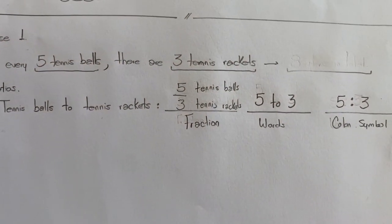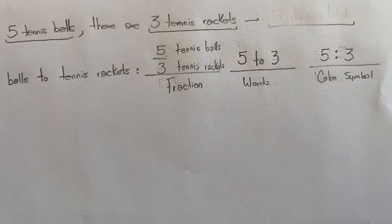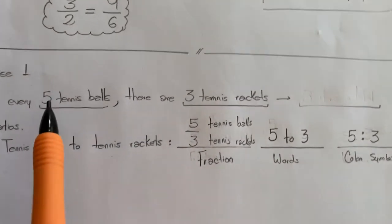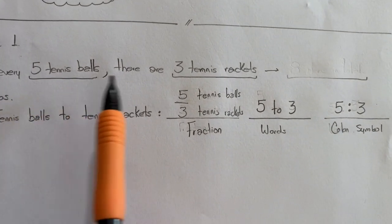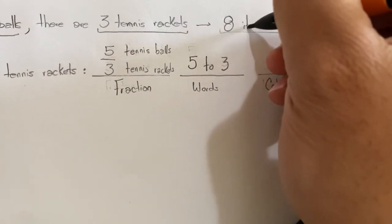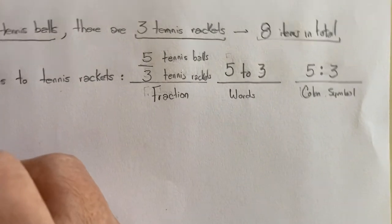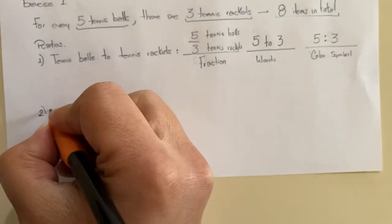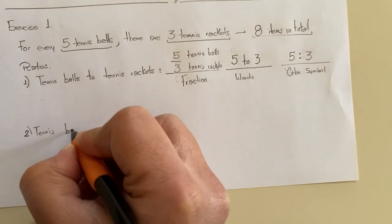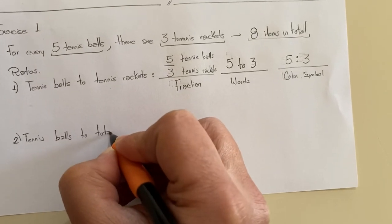For the second exercise, or the second ratio, you must write the ratio between tennis balls and the total pieces of tennis equipment. So again, if you know that you have five tennis balls and three tennis rackets, you know that you have eight items in total. So on your second ratio, you must write the ratio between tennis balls to total pieces.